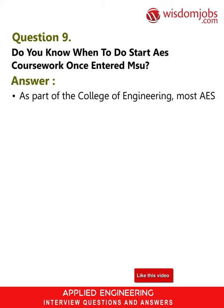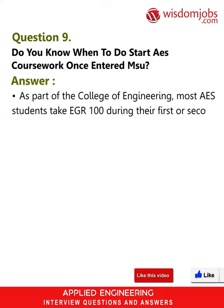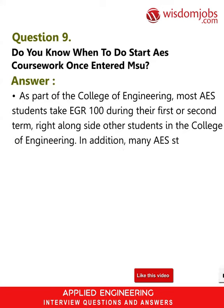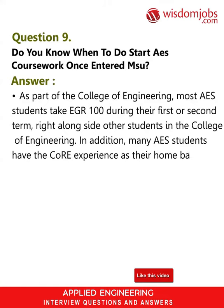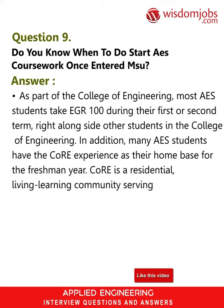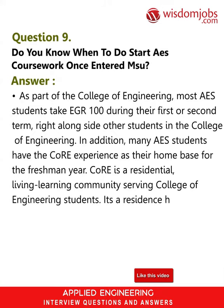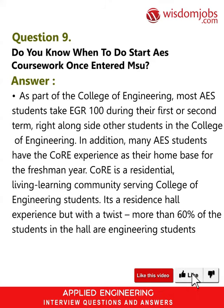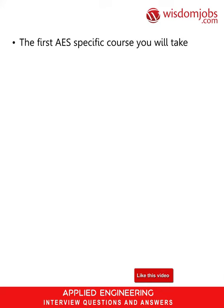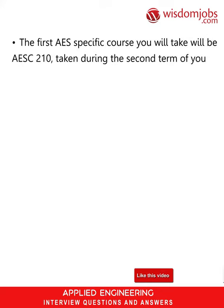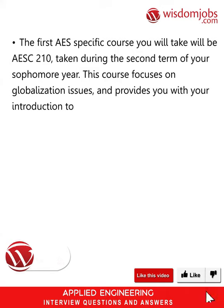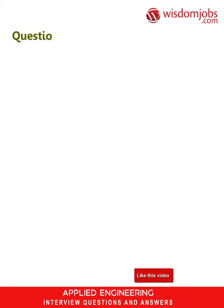Question 9: When do you start ICE coursework once entered at MSU? Answer: As part of the College of Engineering, most ICE students take EGR 100 during their first or second term. Many ICE students also have the CORE experience as their home base for their freshman year — a residential living-learning community where more than 60% of hall residents are engineering students. The first ICE-specific course is EAST 210, taken during the second term of sophomore year, focusing on globalization issues and systems modeling and systems thinking.